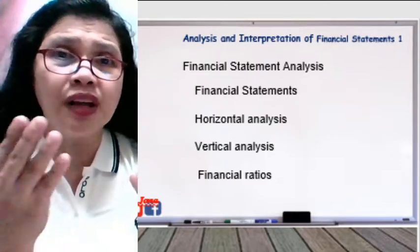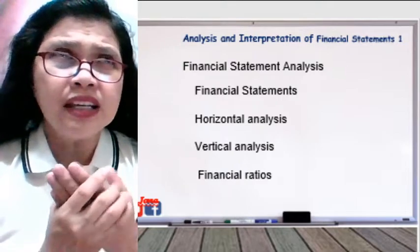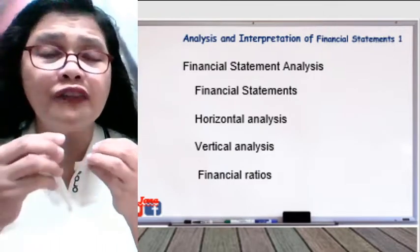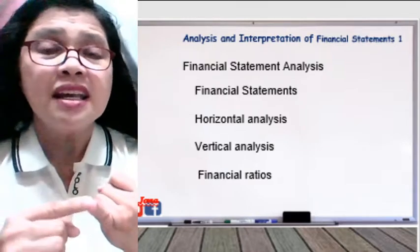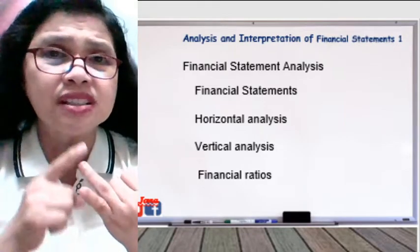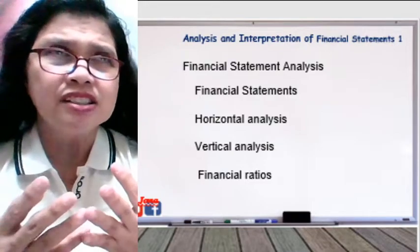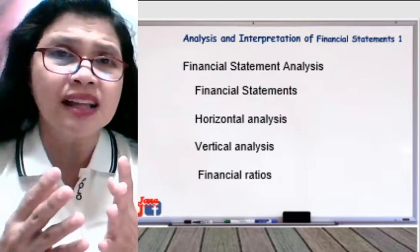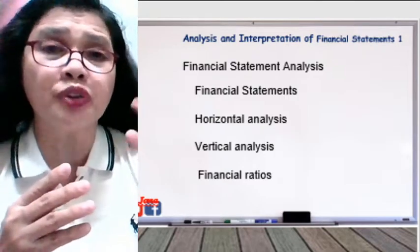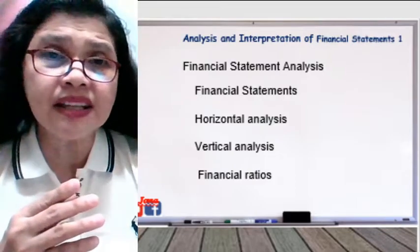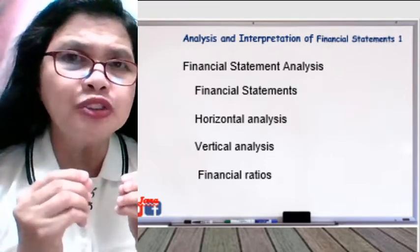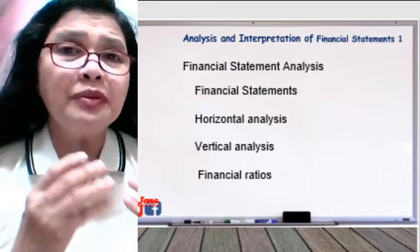Some questions may arise like: what is the financing mix of the assets — is the asset financed solely by investors, or is there a combination of financing from creditors and investors, and what percentage is coming from the creditors? We will also be answering questions about whether there was a change from the previous to the current year in terms of growth, increase, decrease, or no movement at all.